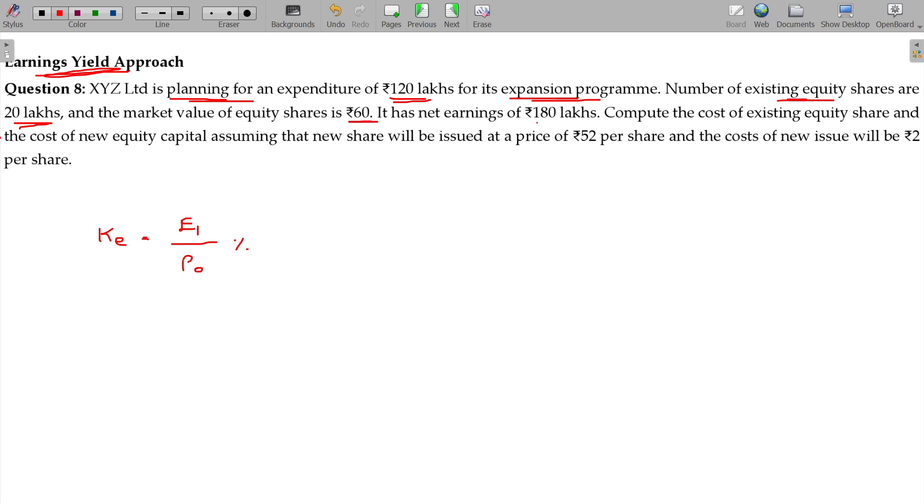If the net earnings are 180 lakhs, earnings available to the equity shareholders being 180 lakhs. Number of shares, 20 lakhs. That is called EPS. EPS is otherwise named as earnings, simply E. 9 rupees is the EPS.